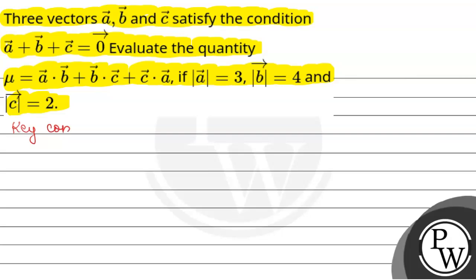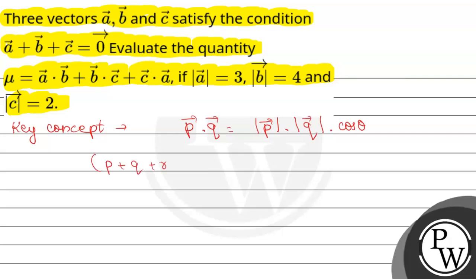Our key concept is this: for vectors p and q, the dot product is mod of vector p multiplied by mod of vector q multiplied by cos theta, where theta is the angle between p and q. Suppose we have three vectors: vector p, vector q, and vector r.